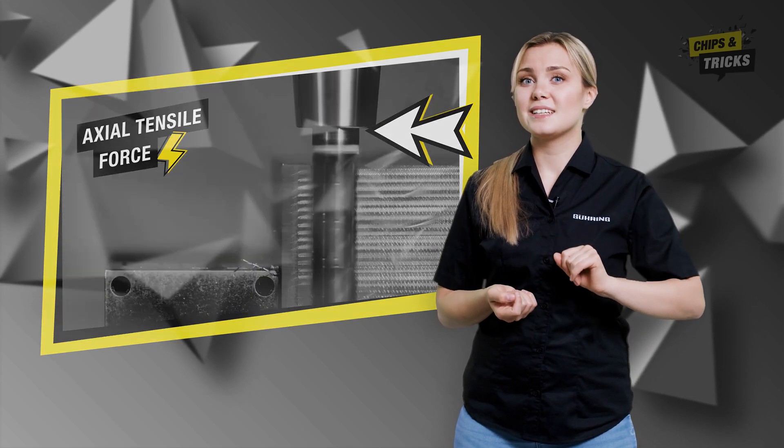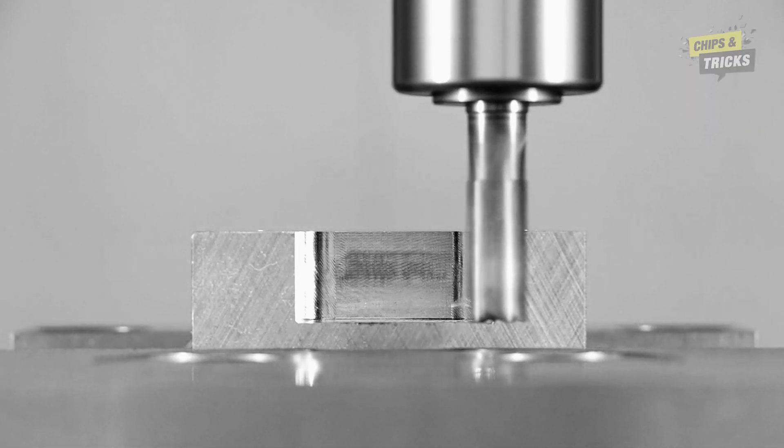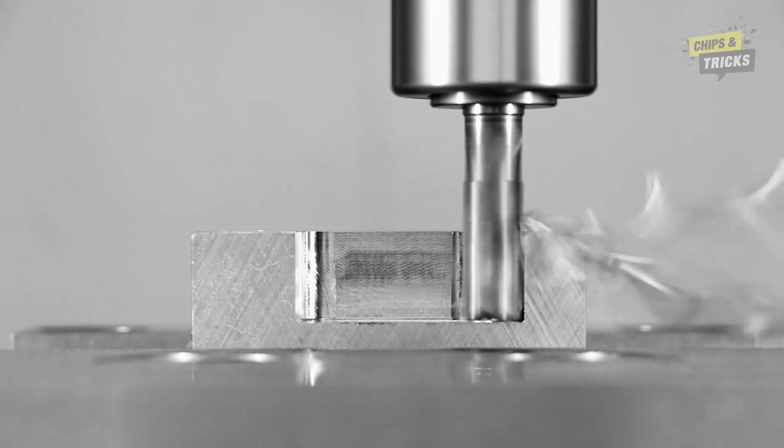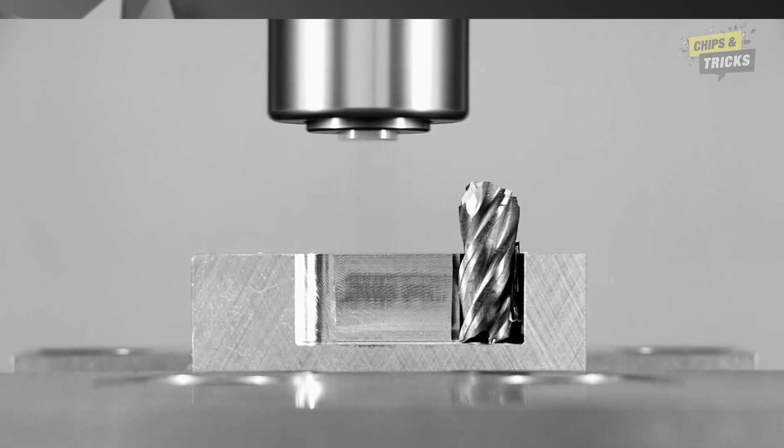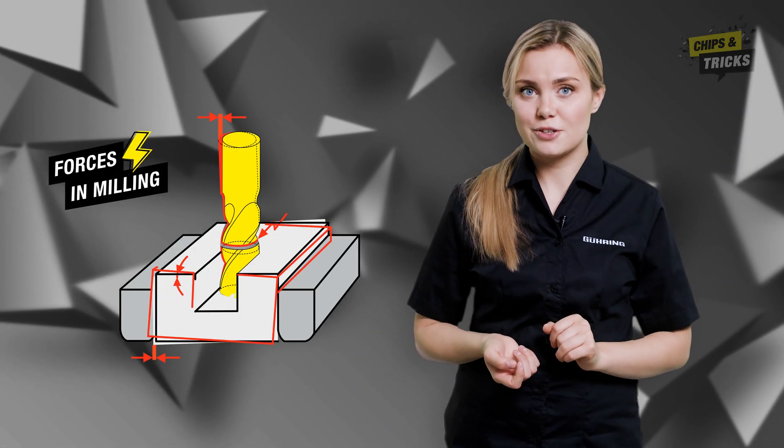Now you know about the radial displacement forces and the axial tensile force — but what do these two forces have to do with tool breakage? If these forces are too high, the tool will be overloaded and the milling cutter will break. It is not possible to stop these forces from arising.